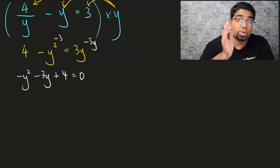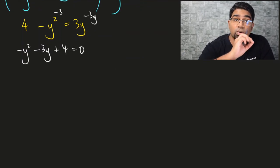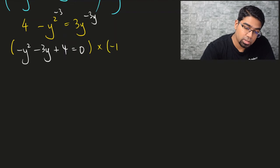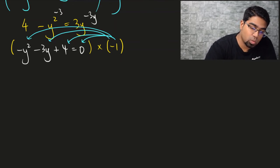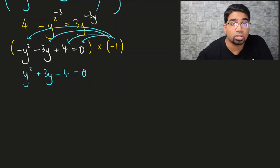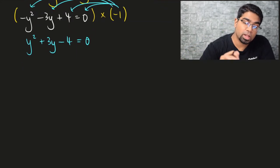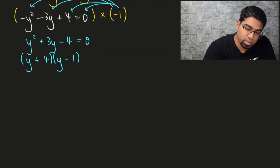We don't like the negative y² term, so we multiply the whole equation by negative 1. This gives us y² plus 3y minus 4 equals 0. This is a simple quadratic — we can factorize it. Factorizing gives us (y + 4)(y − 1) = 0.